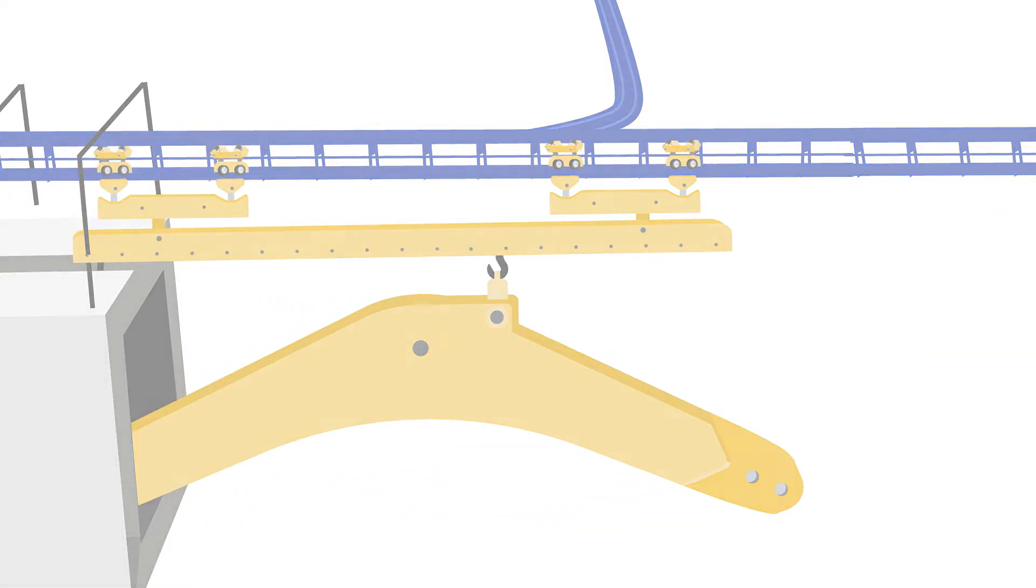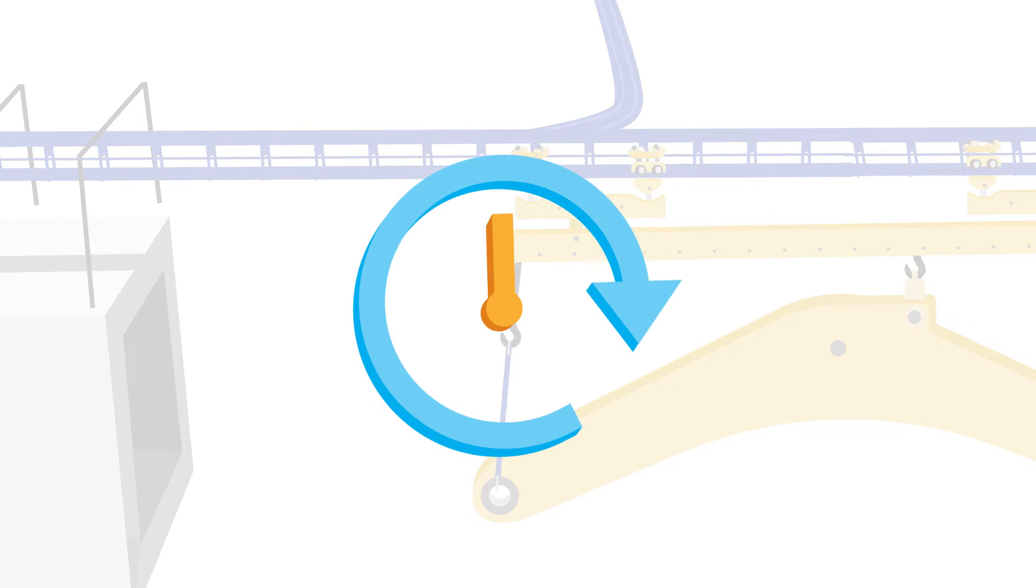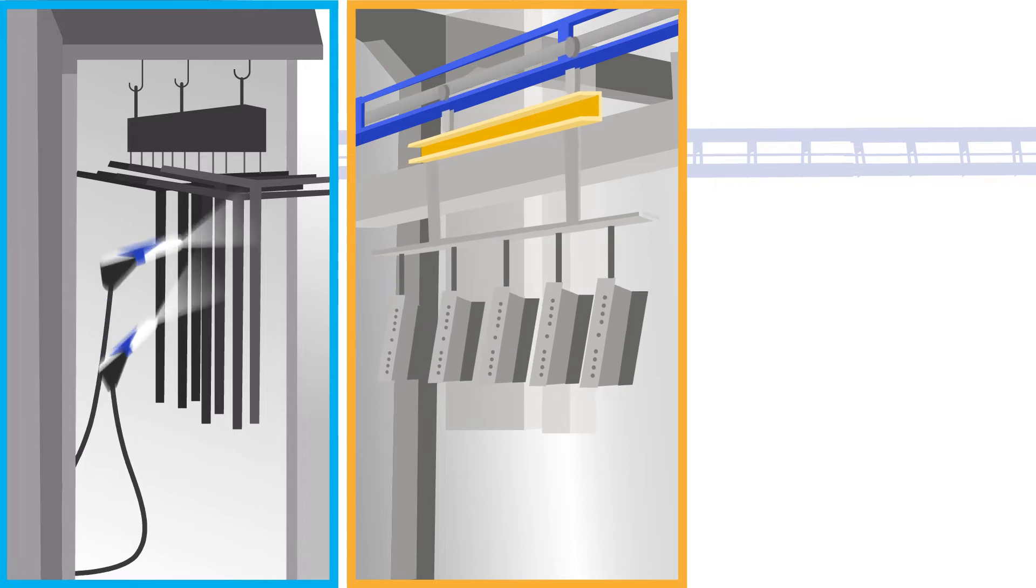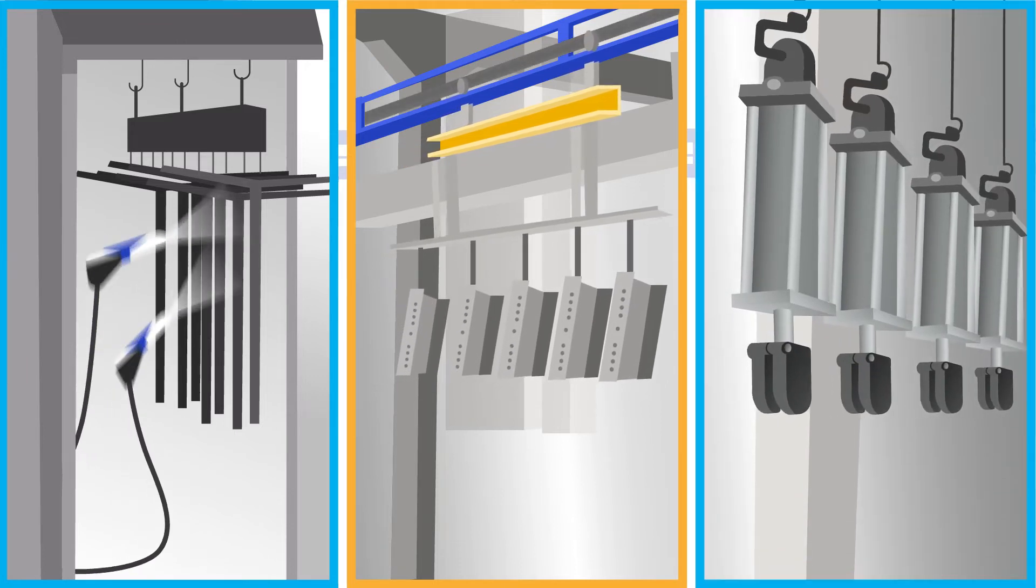IntelliFinishing systems allow product carriers to move up to 40 feet per minute between processes, thus speeding up the entire process cycle time. Even within processes, parts will become custom programmed per recipe to slow down or stop to achieve optimal results.